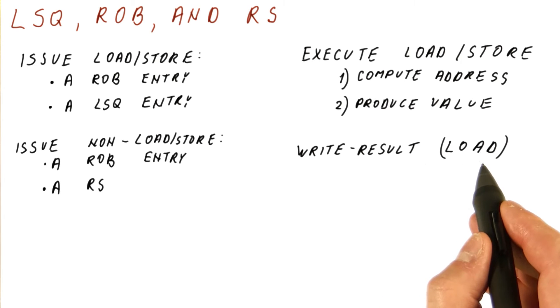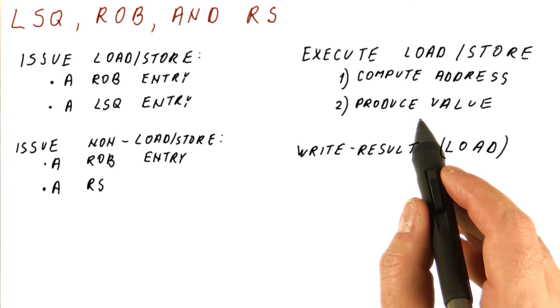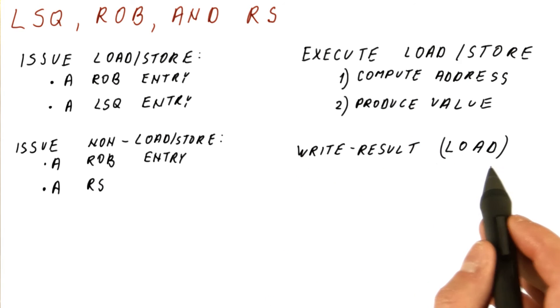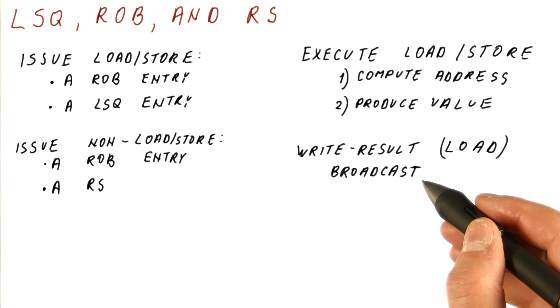We write the result only for loads. For a store, there is no write of the result. The store simply keeps the value and the address in the load store queue for other loads to get it and for the store to finally send it to memory on commit. But the load, as soon as it gets the result, will broadcast that result to dependent instructions so that all the reservation stations waiting for that register value can now proceed.